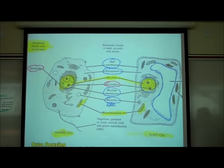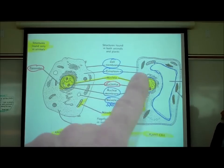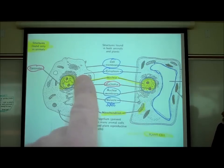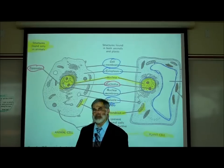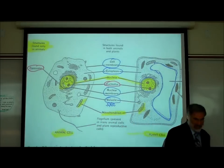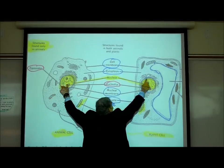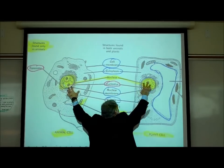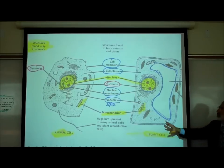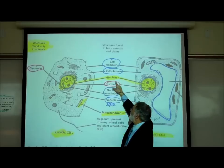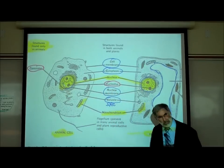Both animal cells and plant cells have a cell membrane, and both have a jelly-like fluid called cytoplasm inside — 80% water, and after that, proteins. They're called eukaryotic cells because they have this large structure in the center called a nucleus. Inside the nucleus is an area called the nucleolus, where there's a high concentration of RNA.